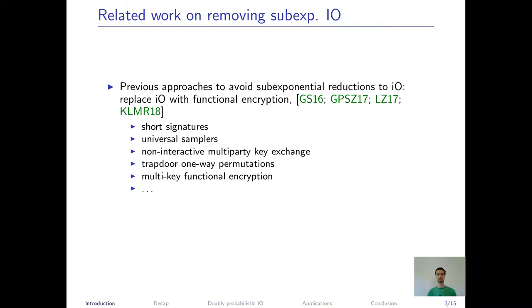There are several previous works on avoiding sub-exponential reductions in the context of I.O. A popular strategy there is to just avoid I.O. and start directly from functional encryption, and this results in the end in an entirely polynomial reduction. This road led to several improvements, for example, in the domain of short signatures, universal samplers, non-interactive multiparty key exchange, cryptographic one-way permutations, multi-key functional encryption, and several others. However, the supported operations of these approaches, they are rather restricted. Our goal here is something more general.